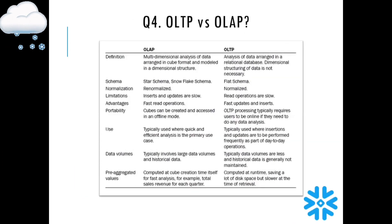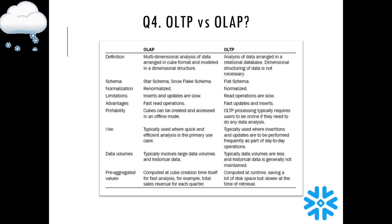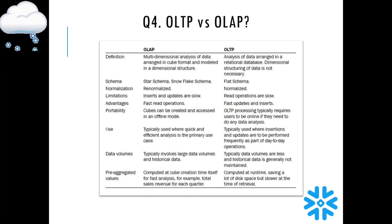In any data warehousing interview, you may be asked: what is the difference between OLAP and OLTP? OLAP stands for Online Analytical Processing and OLTP stands for Online Transactional Processing. OLAP is for multidimensional analysis of data — it is arranged in cube format and modeled in a dimensional structure. OLTP arranges data in a relational table, and dimensional structuring is not necessary.